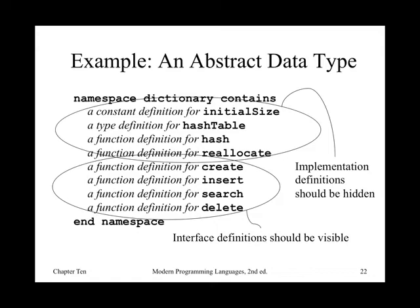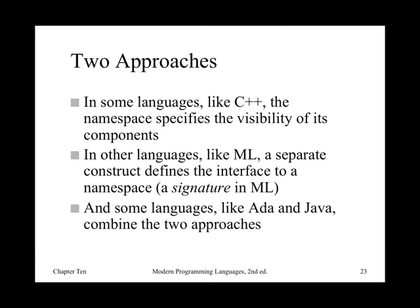Here's an example in an idealized language — not a real thing, but it gives you the idea. I take a namespace, call it dictionary, and it has certain things. Some of them, like initial size and hash table, are implementation details that people outside shouldn't see. Others, like create, insert, search, and delete, are clearly interface definitions you want visible. You need the ability to keep some private and expose some. In C++, the namespace specifies visibility directly. In other languages like ML, you've got a separate construct that defines the interface to a namespace — called a signature. Some languages combine both approaches: within the same namespace you delineate private and public sections, which is very C++-ish. Another approach is to separate the concepts entirely — an interface says what's public, and a separate namespace contains the implementation.